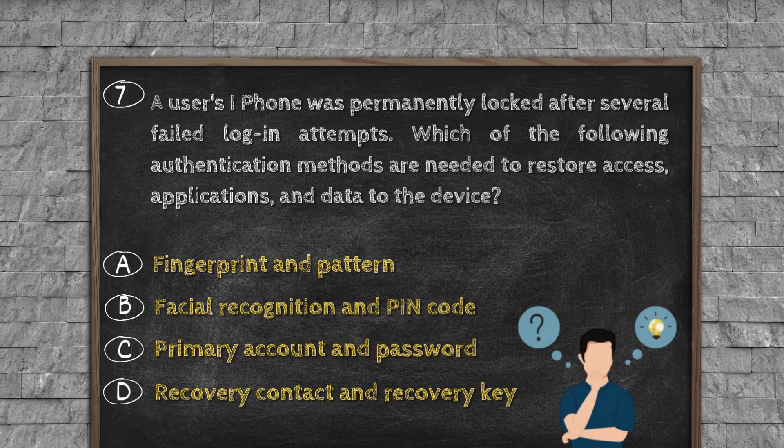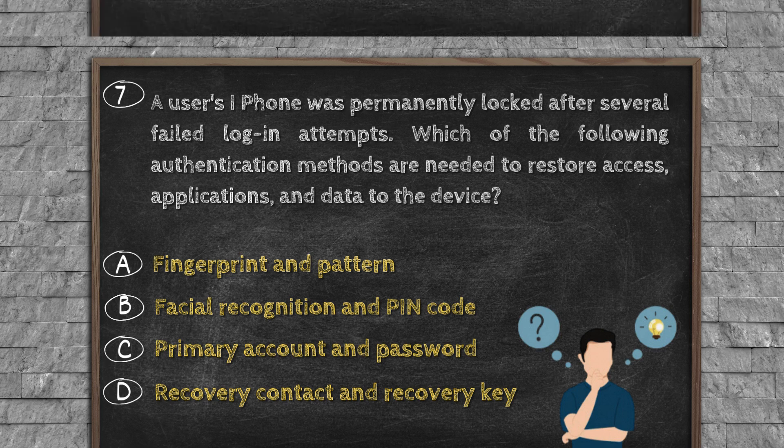Question number seven. A user's iPhone was permanently locked after several failed login attempts. Which of the following authentication methods are needed to restore access, applications, and data to the device? Option A, fingerprint and pattern. Option B, facial recognition and PIN code. Option C, primary account and password. Option D, recovery contact and recovery key.